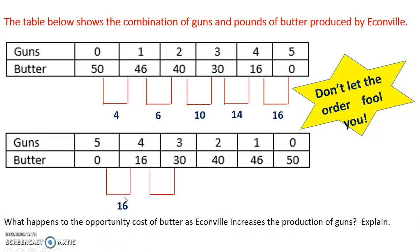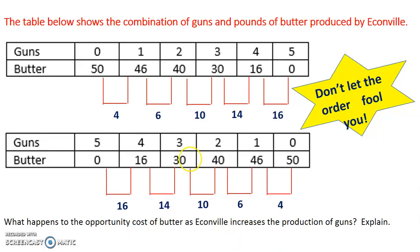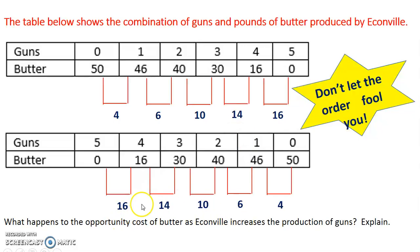What you need to recognize is that you're decreasing the amount of guns as you move to the right with this table. When answering it, you need to start with: as I'm increasing the production of guns, how much am I giving up of the butter? Do not let the order fool you as to how they present it. If you need to on the FRQ, rewrite the table so that you've got it set up correctly. This is still showing increasing opportunity costs.